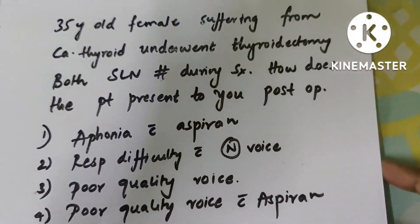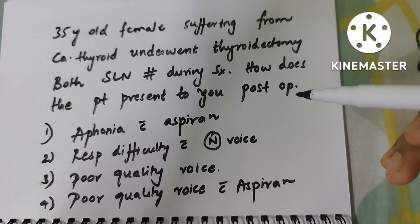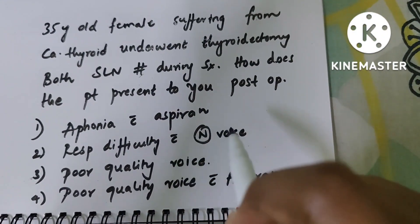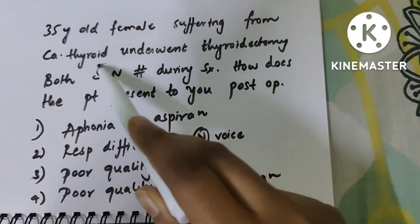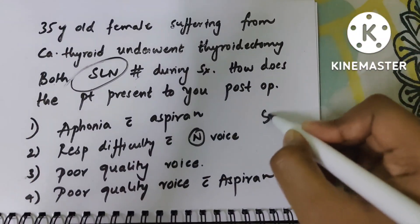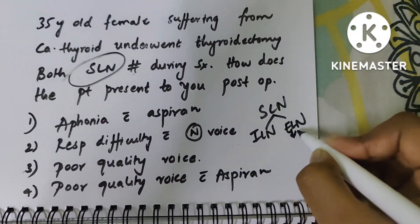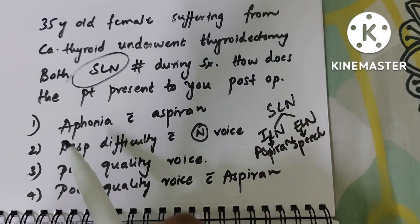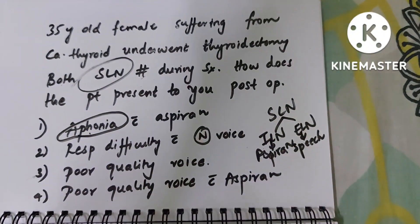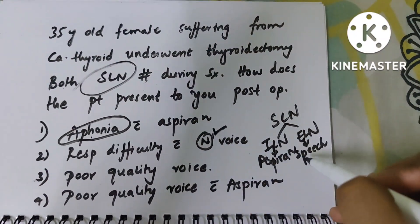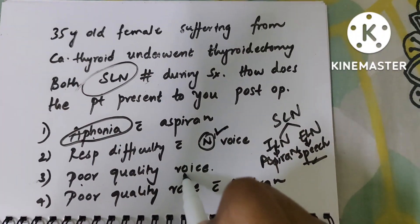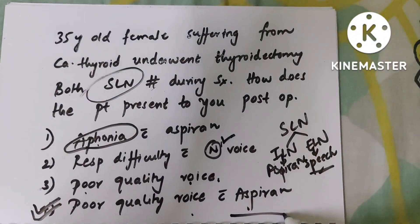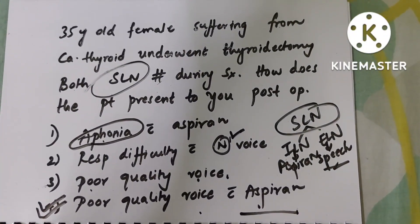Clinical question: a 35-year-old female with carcinoma thyroid underwent thyroidectomy, and both superior laryngeal nerves were injured during surgery. How does she present postoperatively? Since both SLNs are gone, ILN and ELN are both lost. When ELN is lost, pitch of the voice is affected; when ILN is lost, aspiration occurs. Aphonia is related to complete palsy, not SLN palsy. Normal voice is not possible since speech is affected. The correct answer is poor quality of voice with aspiration — the perfect explanation for SLN palsy.